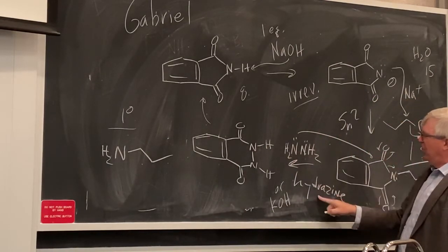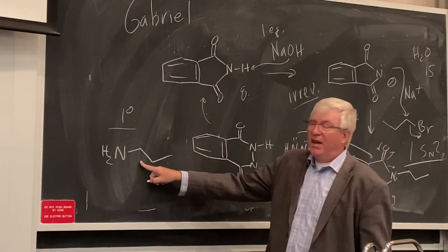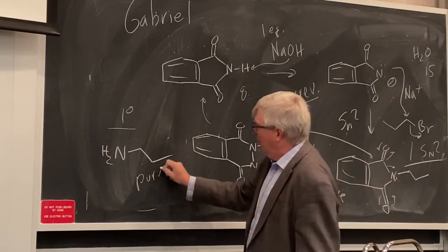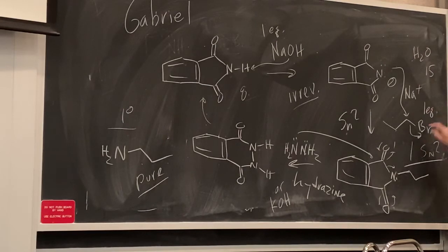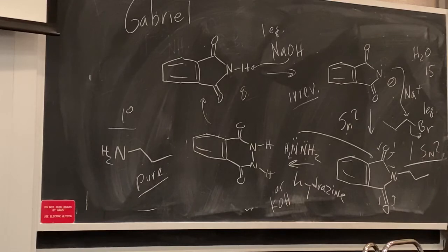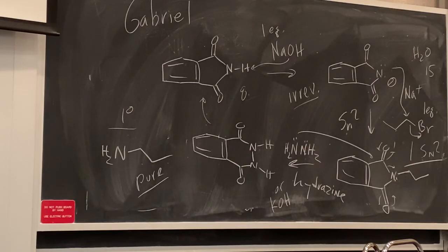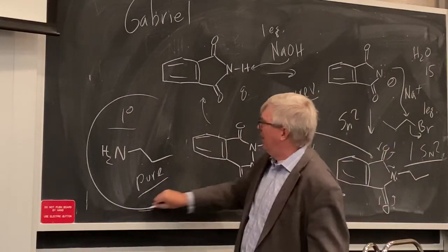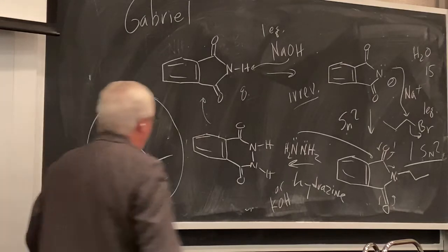The Gabriel synthesis cleanly gives the pure primary amine. If you have a precious alkyl halide with lots of functionality, use one equivalent and cleanly convert it to a primary amine. You can also use KOH to hydrolyze, giving phthalic acid (which can be recycled back to phthalimide). These steps combine carboxylic acid derivative chemistry you've already seen with alkylation — but it's the cleanest route to primary amines.